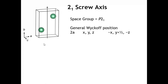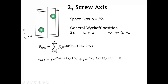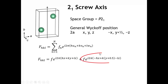What would the structure factor look like for this unit cell? This is our generic equation for the structure factor of any reflection h, k, l. Because there are two atoms in the unit cell, we're going to have two terms. We can write out those terms from the positions of the atoms: the first term corresponds to atom 1 at x, y, z, and the second term corresponds to atom 2 at x̄, y plus 1/2, z̄.